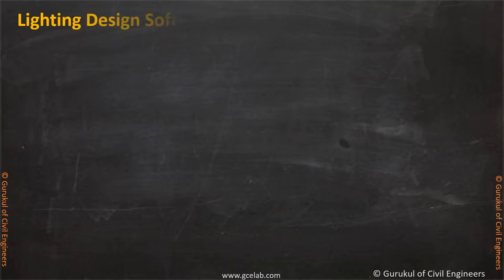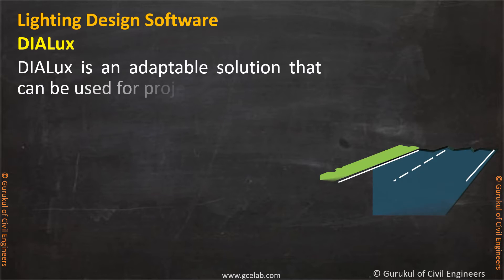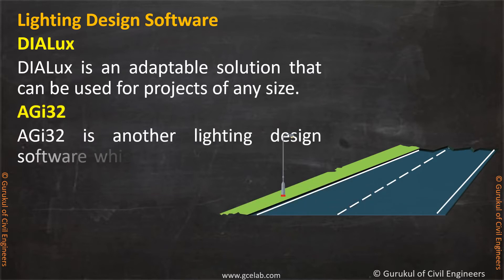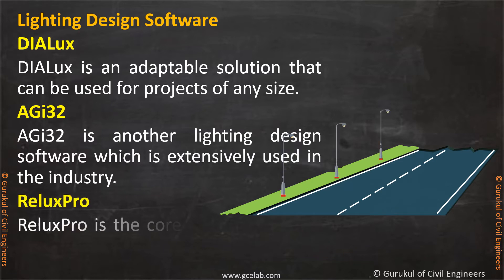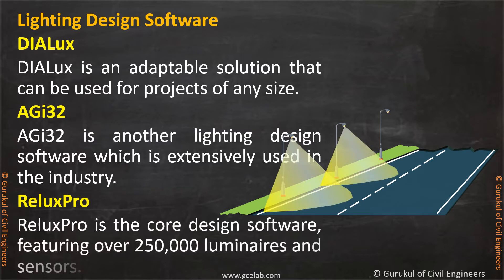Lighting design software. Dialux is an adaptable solution that can be used for projects of any size. AGI 32 is another lighting design software which is extensively used in the industry. Relux Pro is the core design software, featuring over 250,000 luminaires and sensors.